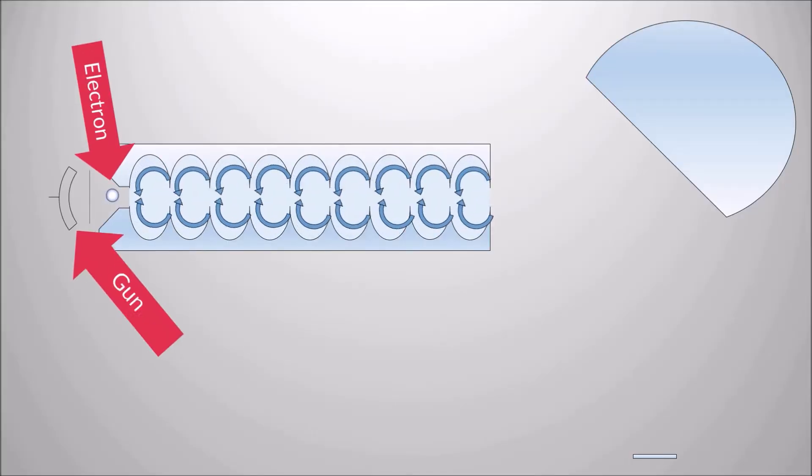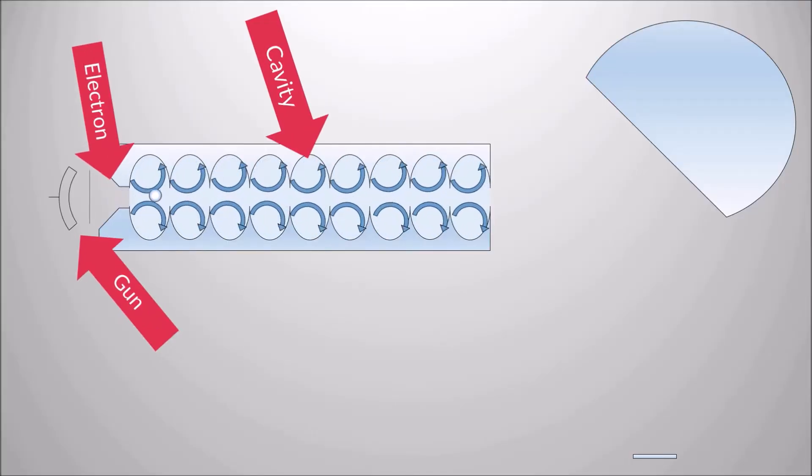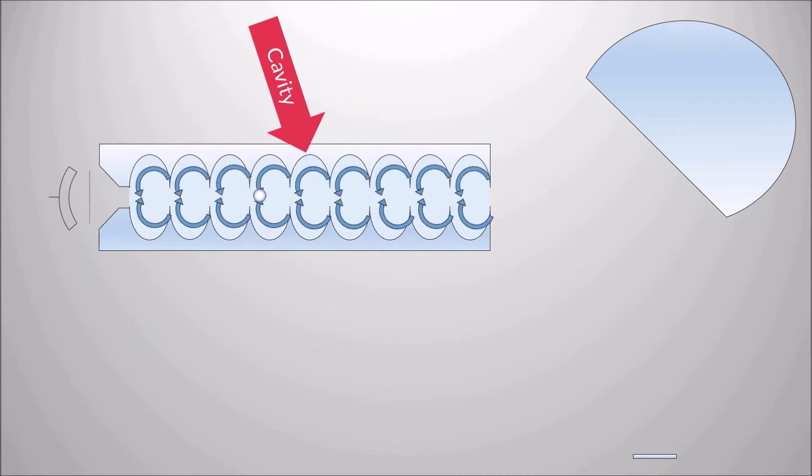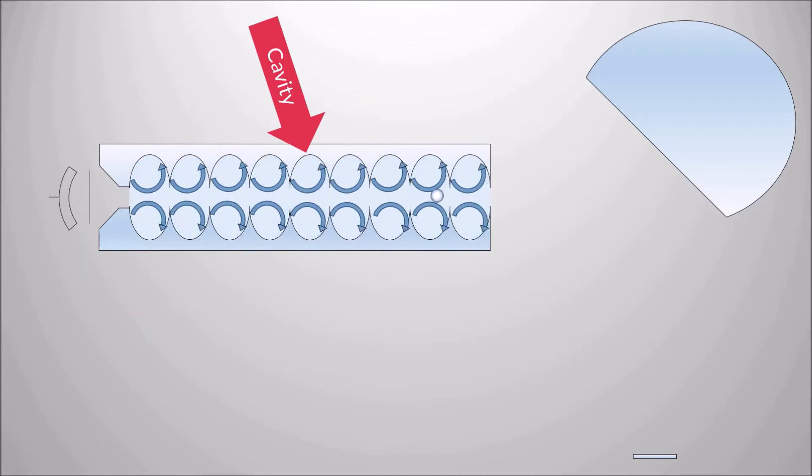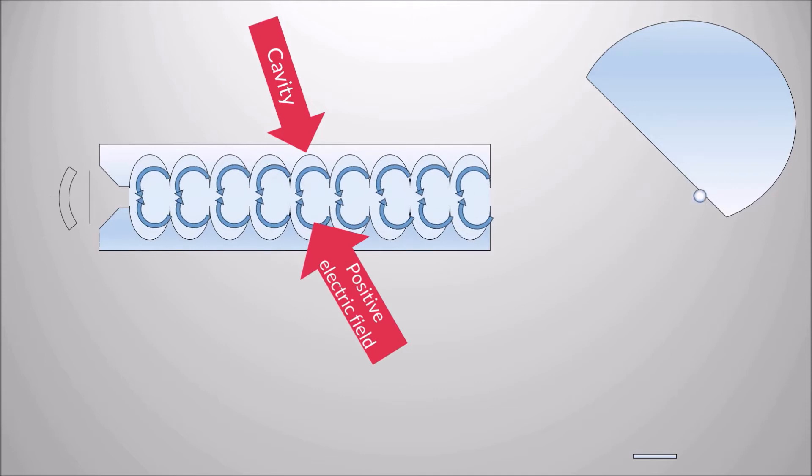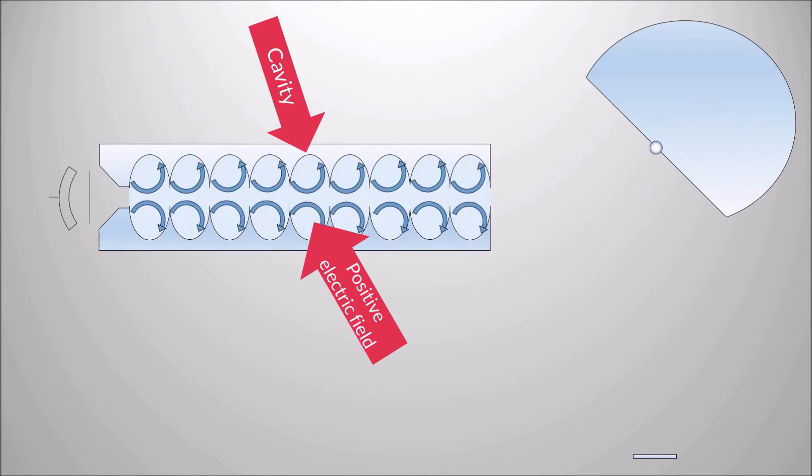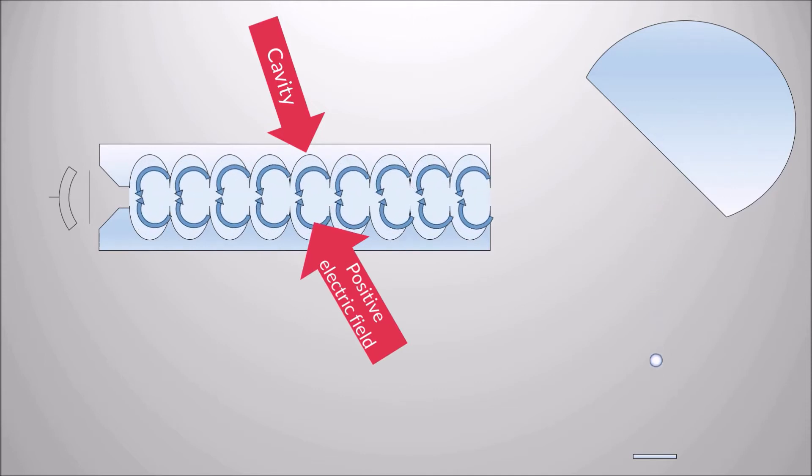When the electrons are emitted from the gun and reach a cavity, in order to be accelerated, they must always see a positive electric field and then be accelerated, as if on a wave.